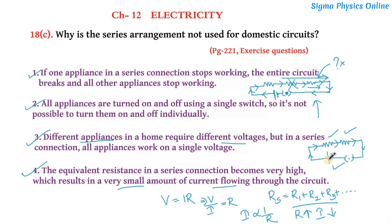That is the reason we do not connect all of the appliances in series in domestic circuits. Rather, they are connected in parallel, which has a lot of advantages over the series connection. So I hope you have understood the solution to this question.